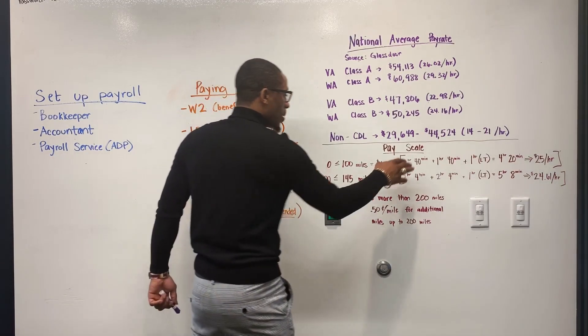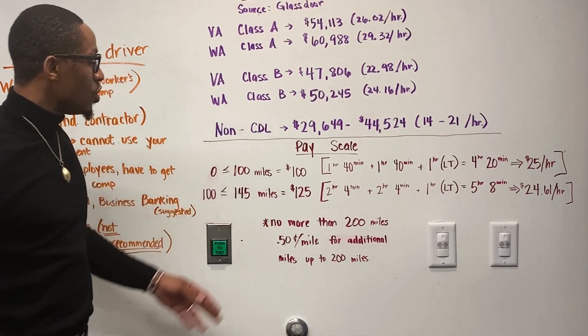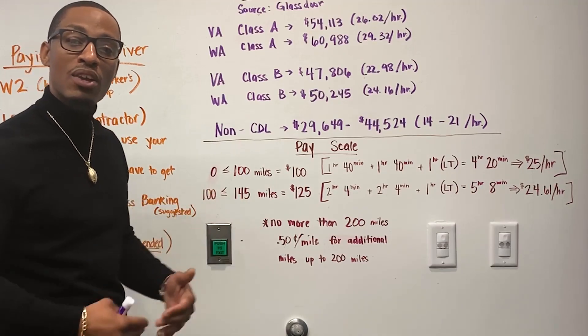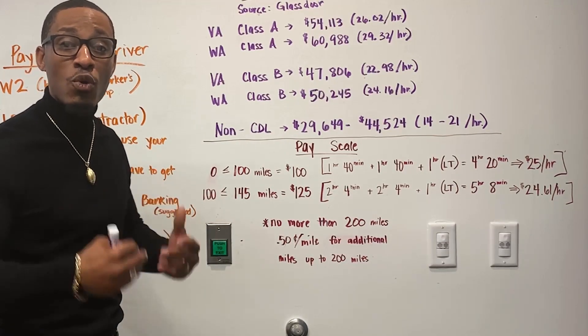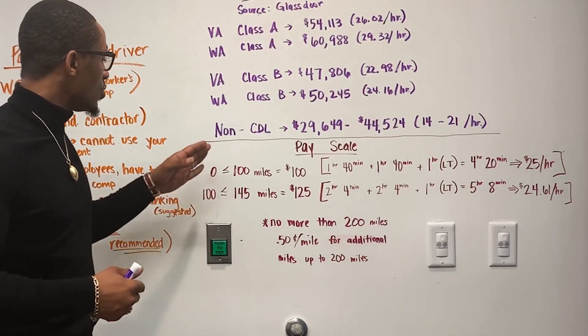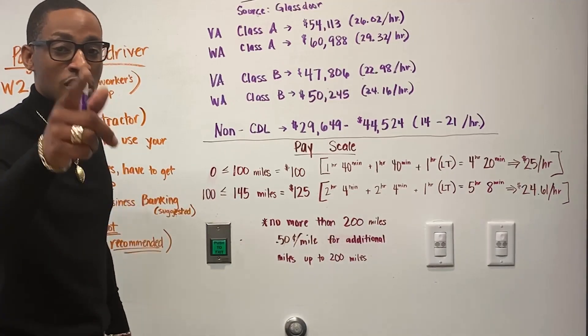Now, our pay scale, zero to 100 miles. So 100 miles or less, you're going to pay your driver $100. So to keep it fair and keep the morale in your company, even if that driver drives 40 miles, you still want to pay them $100. So zero to 100 miles, you want to pay your driver $100.